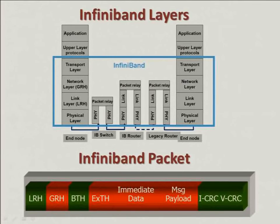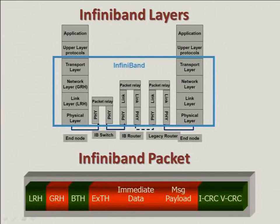A quick look at InfiniBand packets. We have the LRH, which is a local route header — we must have an LRH on each InfiniBand packet, addressed with a LID. The next one is the GRH, the global route header, addressed with a GID. The GID representation is like IPv6 — it's 128-bit. Then we have the base transport header, which keeps information about our data and InfiniBand payload. We also have the extension header with more send data information, immediate data, the message payload, and at the end our checksums.